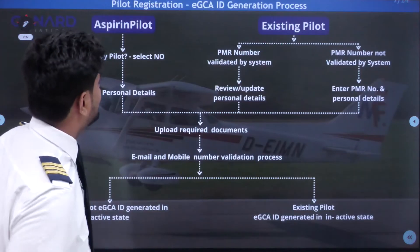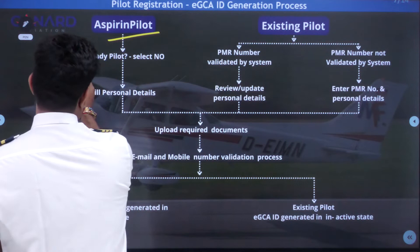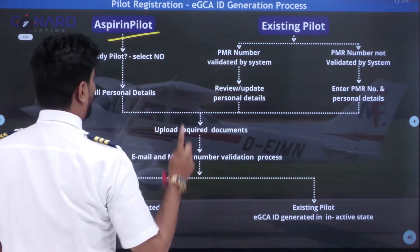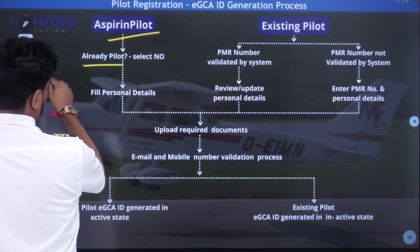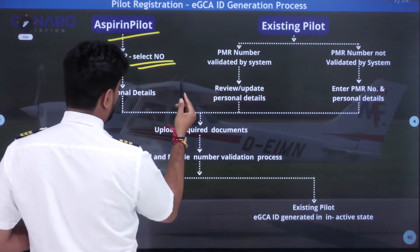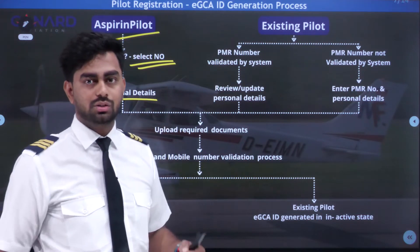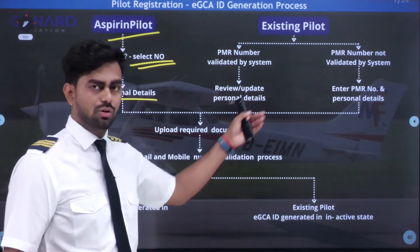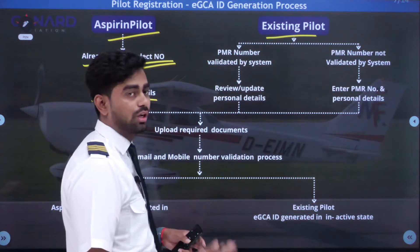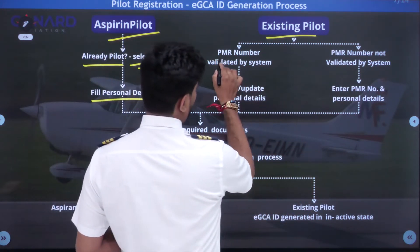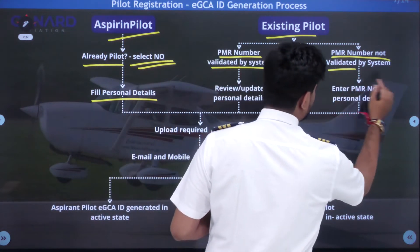The basic steps for aspirant pilots: go to the EGCA website, where a display will show the option 'Already a pilot?' — select No, then fill in all your personal details such as name and date of birth. For existing pilots who had a previous Udan account, there are two options: if your PMR number is validated by the system, or if it is not validated by the system.